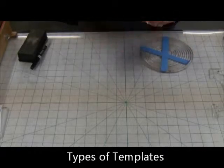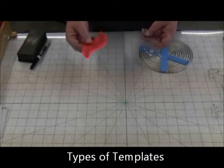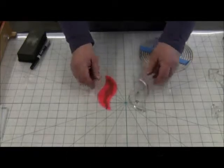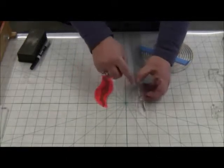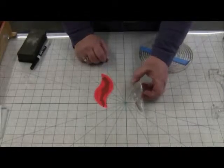Alright, so to begin with, let's talk about the different types of templates. The templates can be made out of eighth inch acrylic template material or quarter inch acrylic template material.